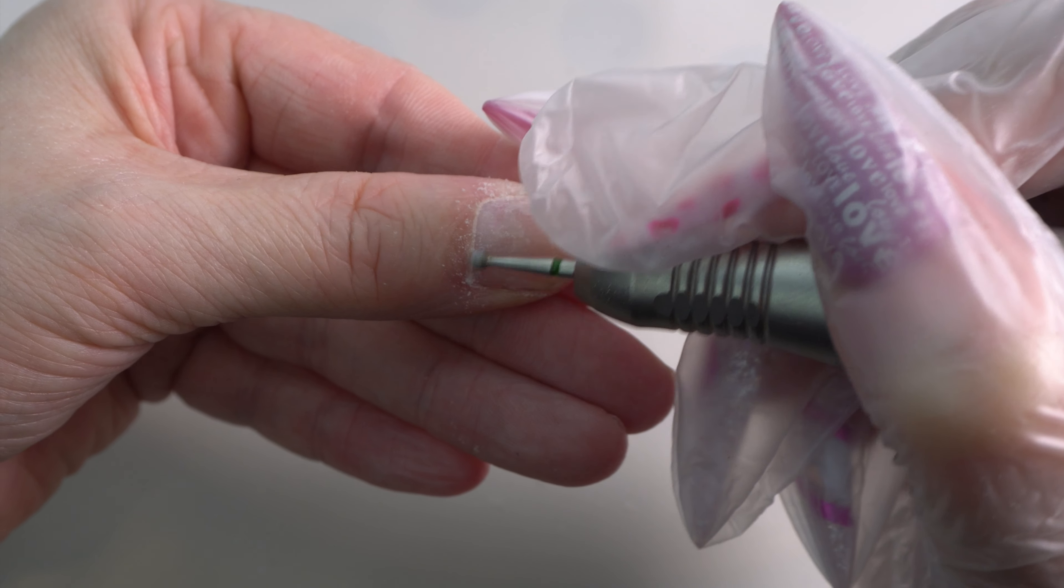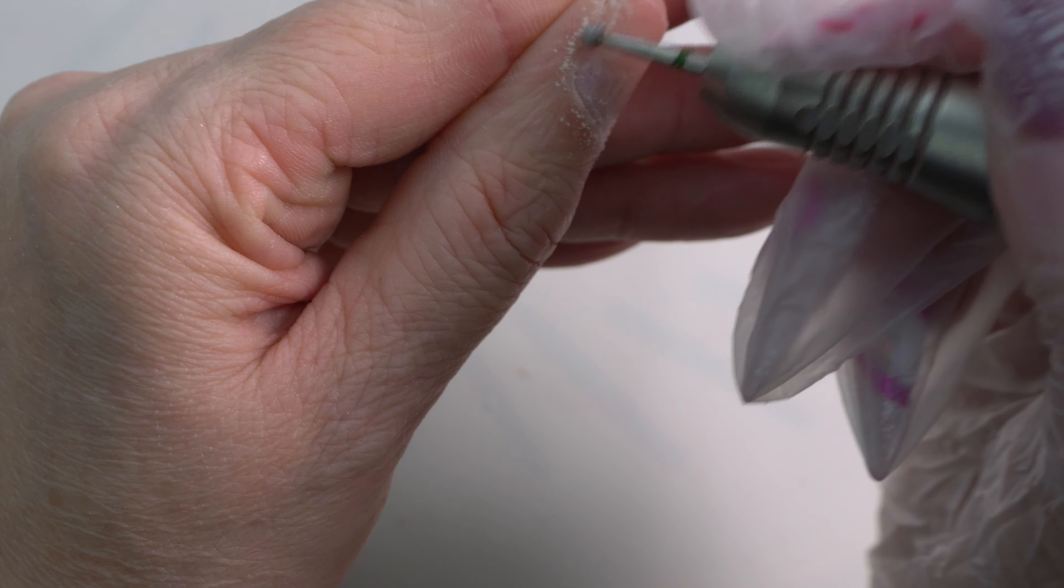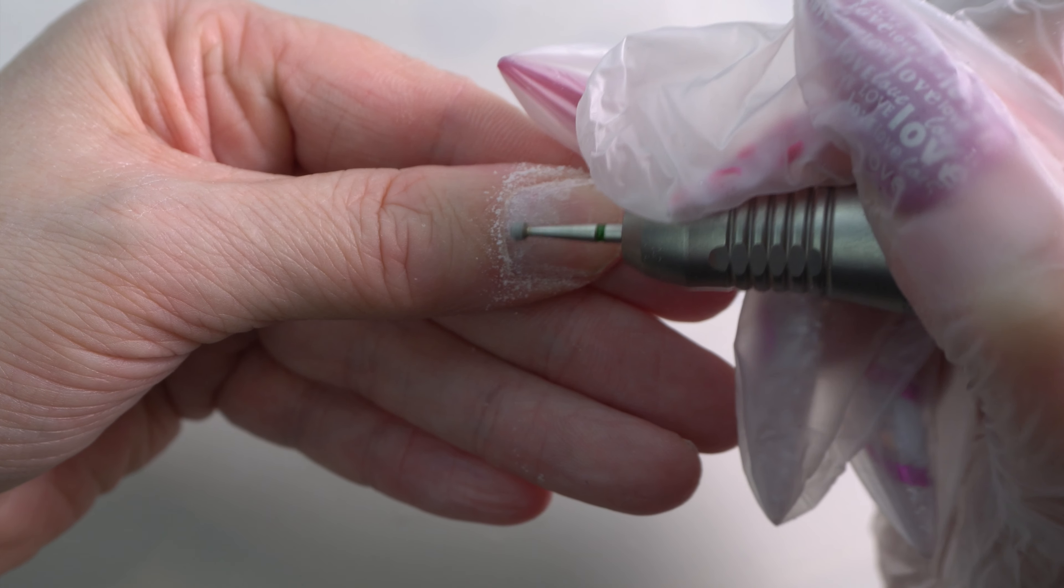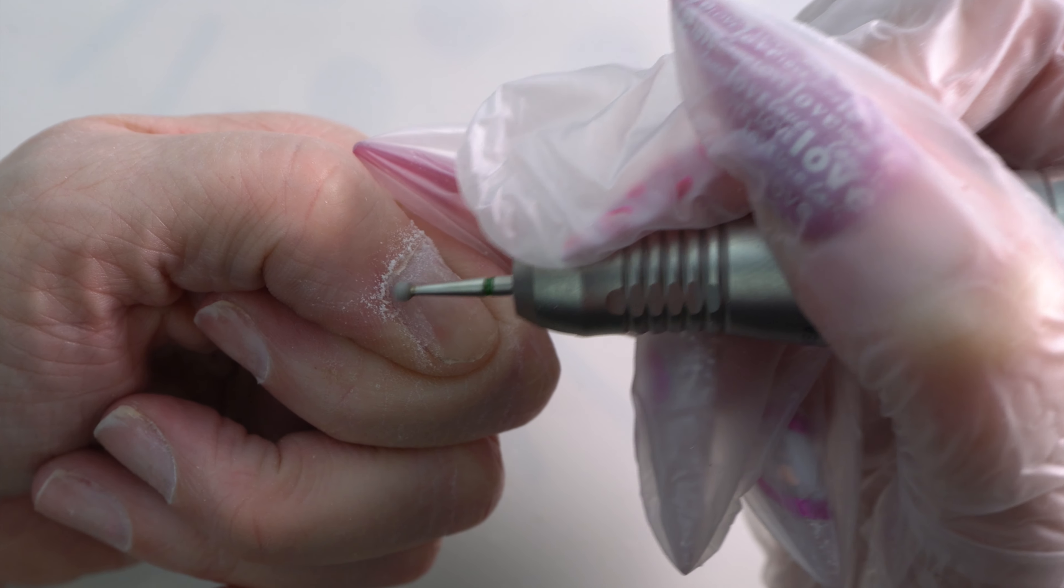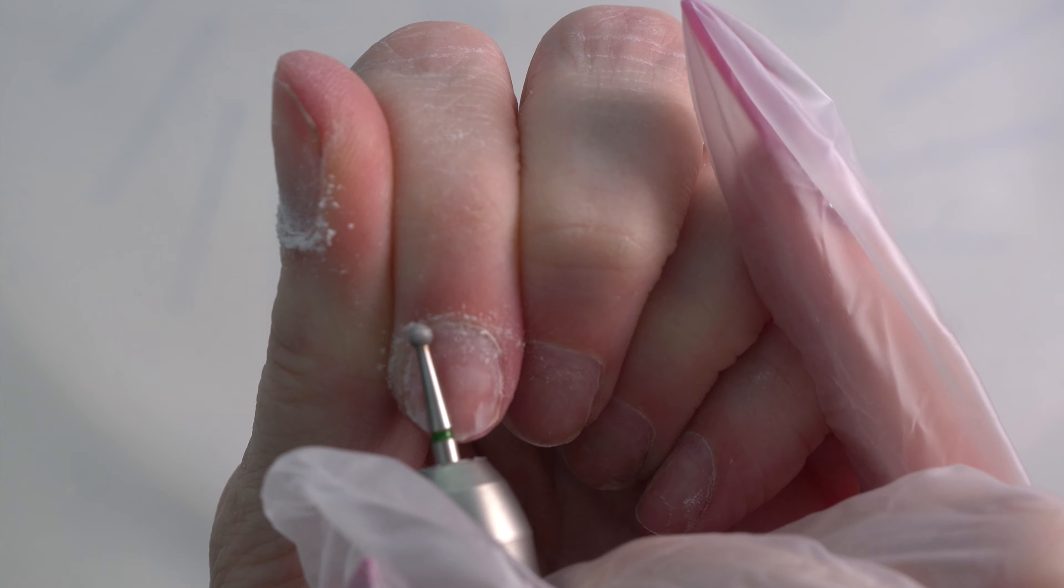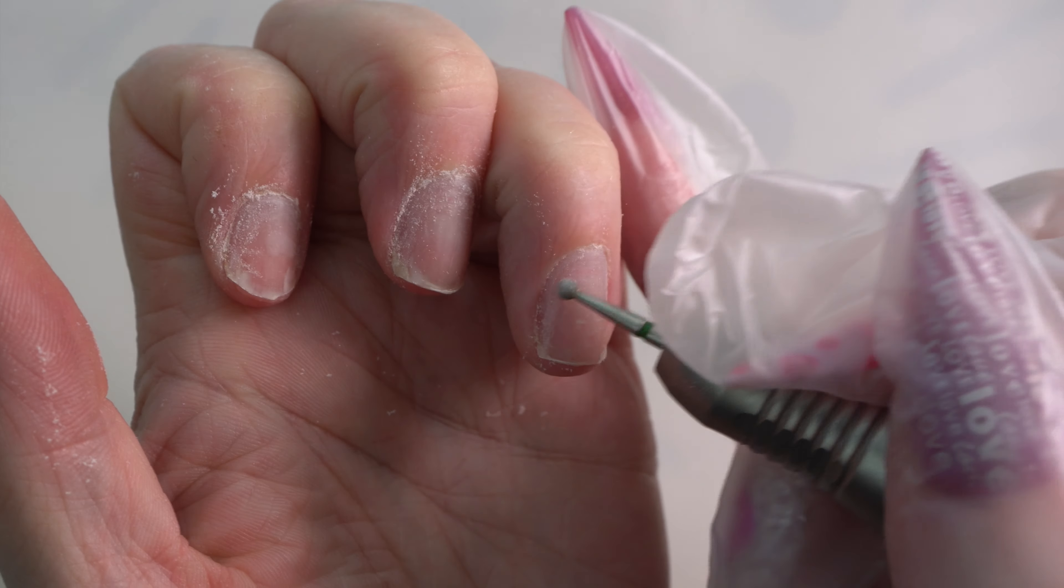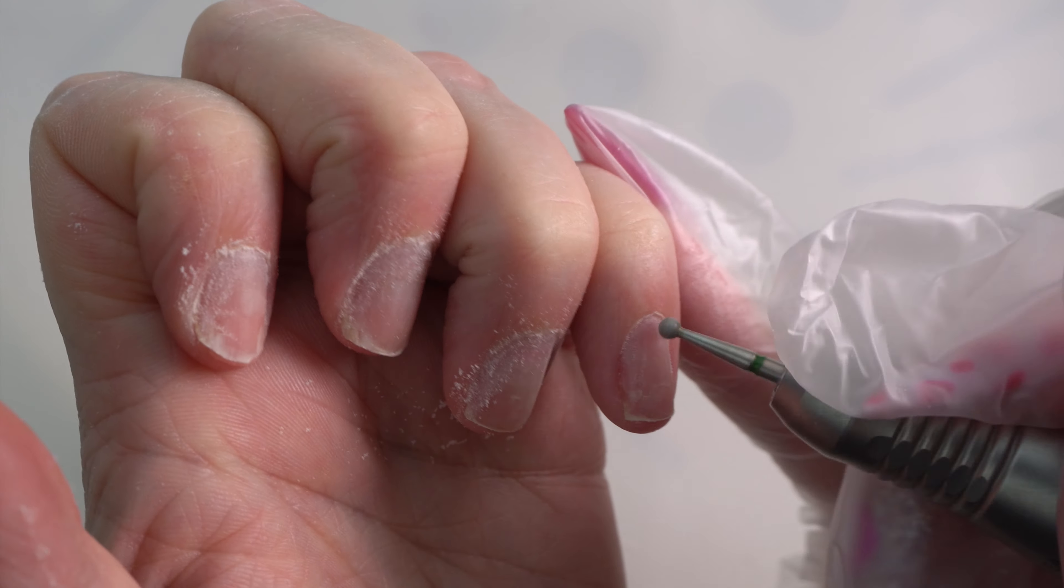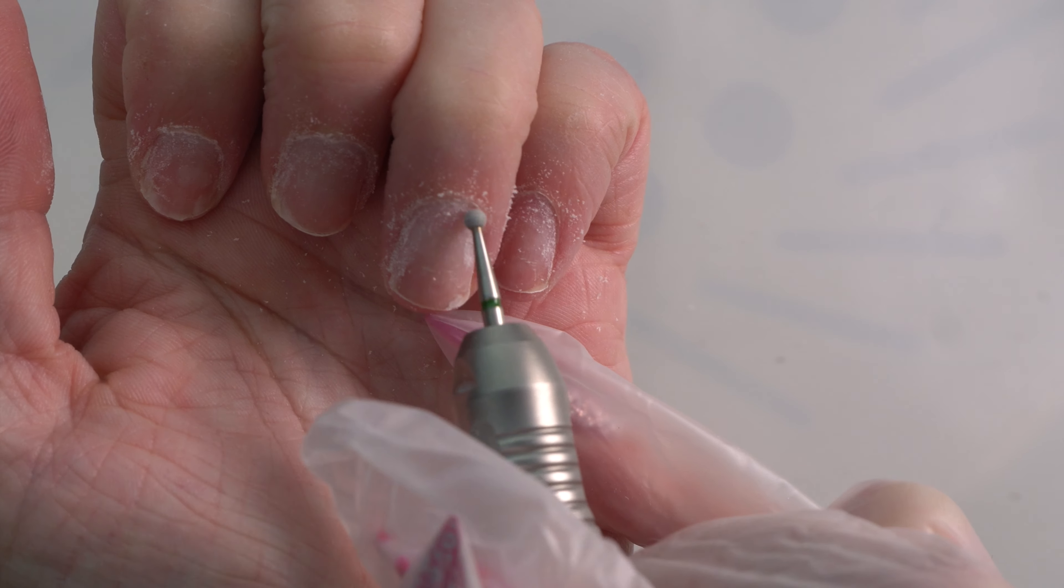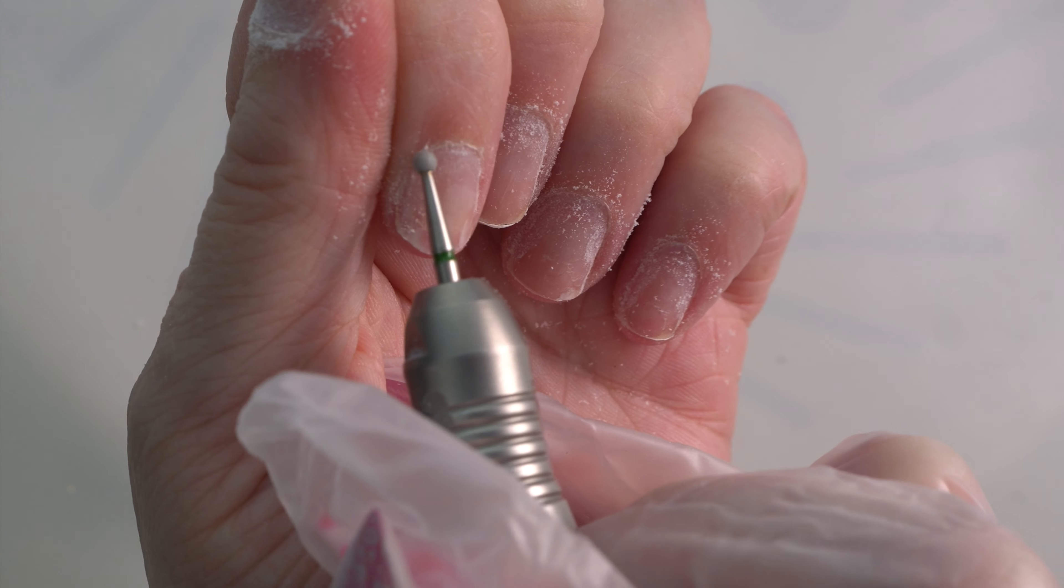I then come in with an even finer bit—a ball bit—and I'm just going to go over the dead skin and remove and smooth out any of the excess there. Again, once we've done it going all the different ways, I also then put it in the reverse rotation to go around the right-hand side.